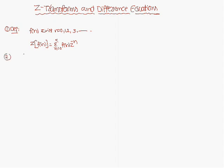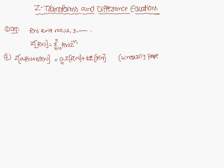Next we will discuss the linearity property. This is the same as what we have discussed in the Laplace transform. Z of a into f of n plus b into g of n is equal to a into Z transform of f of n plus b into Z transform of g of n. The constants are brought outside of the Z transform. This is the linearity property, and in most problems we will use this property.